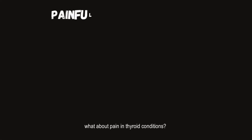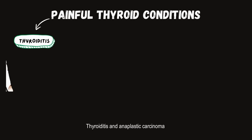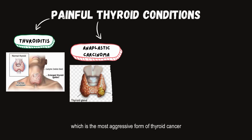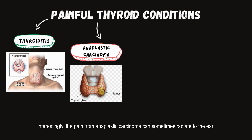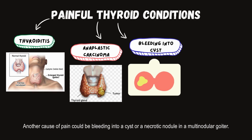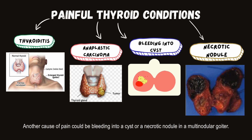What about pain in thyroid conditions? Thyroiditis and anaplastic carcinoma, which is the most aggressive form of thyroid cancer, can cause significant pain. Interestingly, the pain from anaplastic carcinoma can sometimes radiate to the ear if it spreads to nearby structures. Another cause of pain could be bleeding into a cyst or a necrotic nodule in a multinodular goiter.